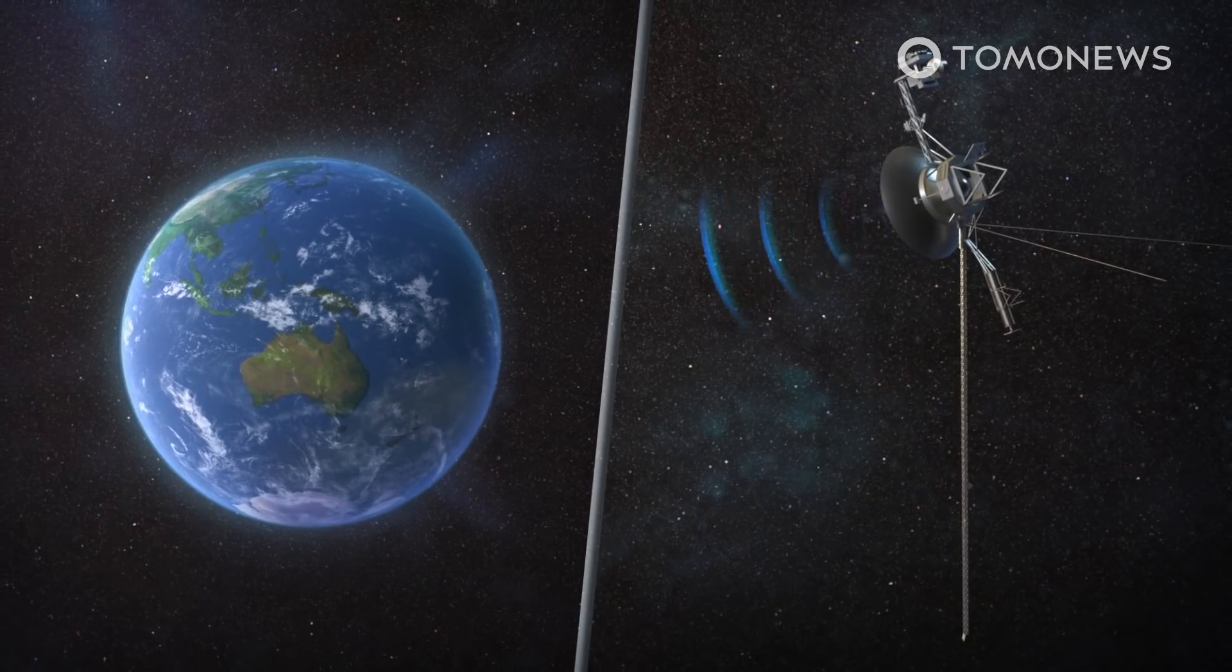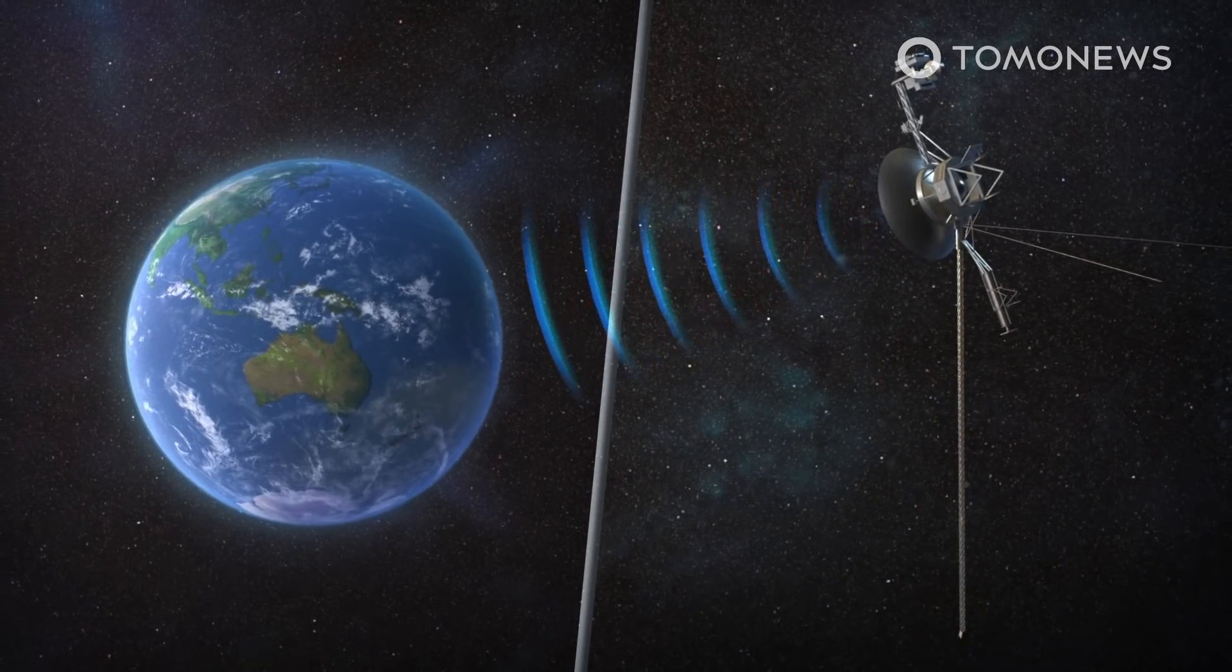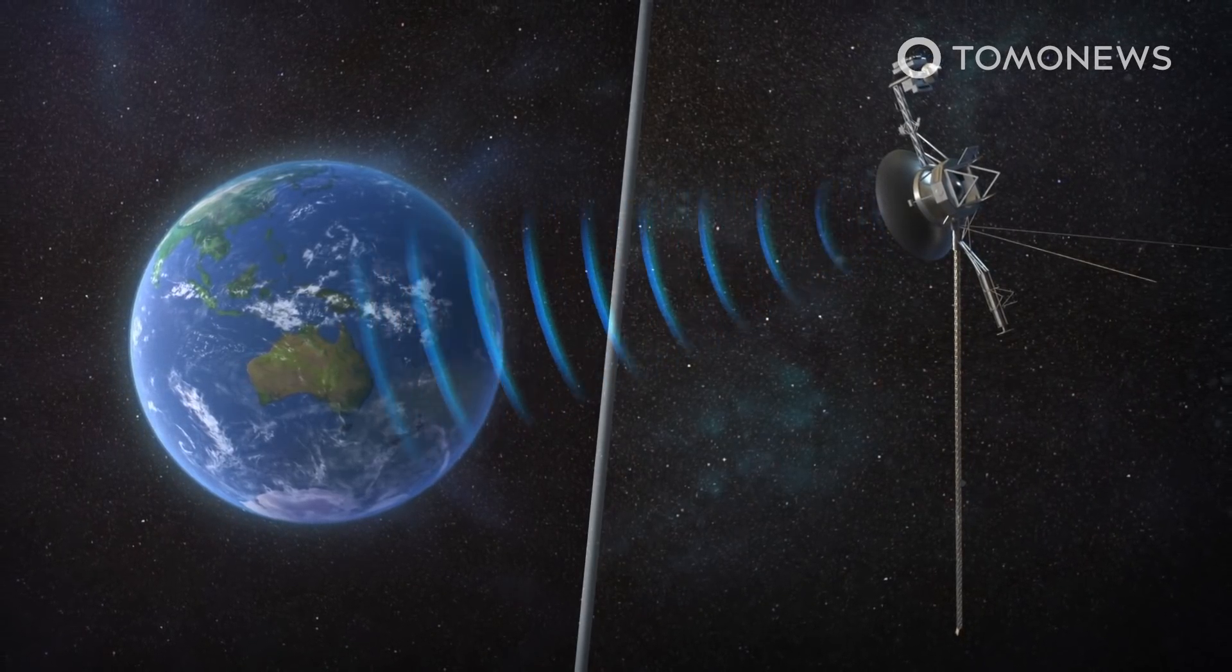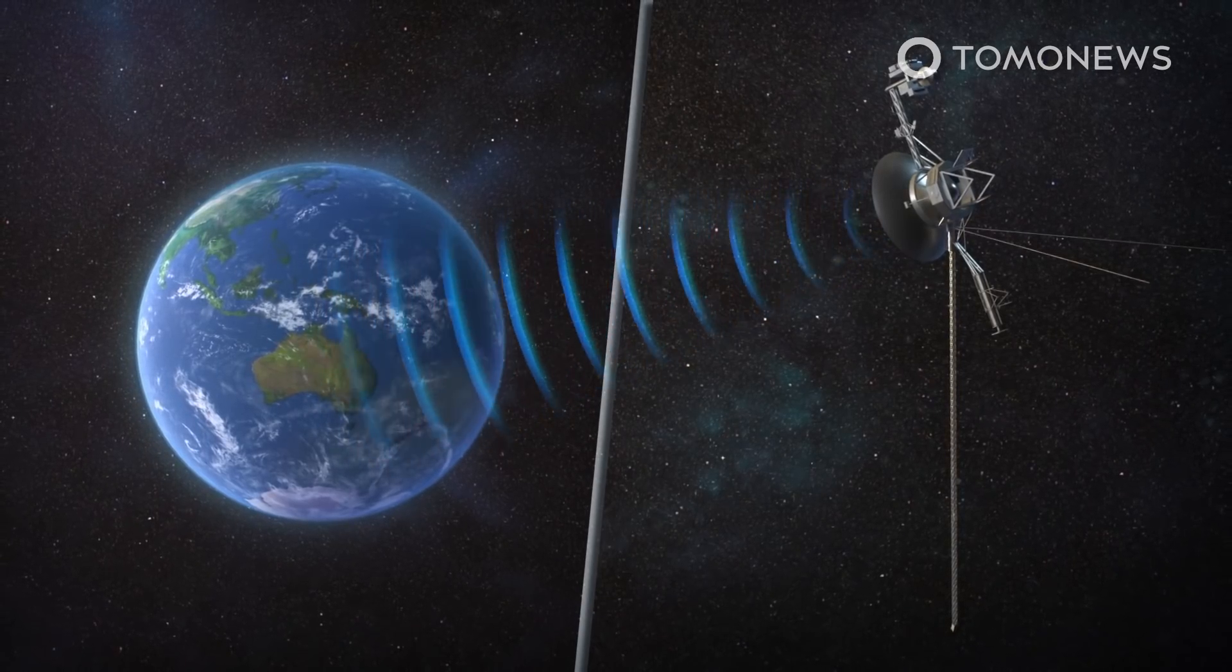During this time, the Voyager team will put the spacecraft into a state of inactivity, which will still allow the spacecraft to send back scientific data to the team during the next 11 months.